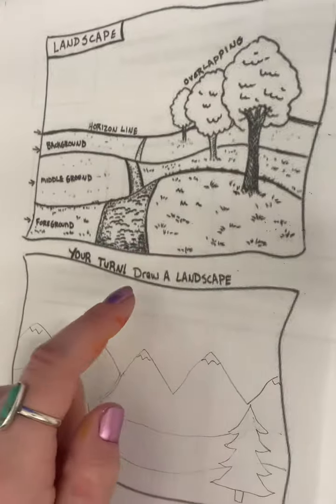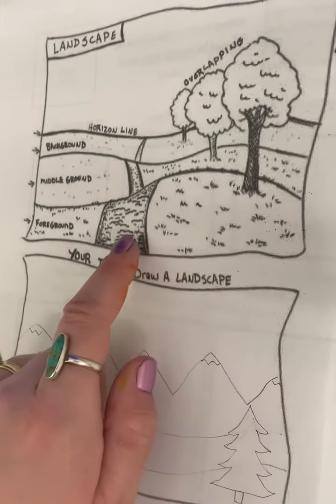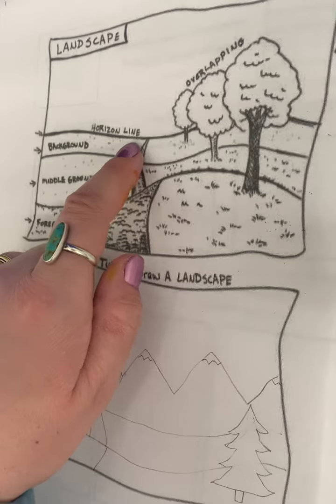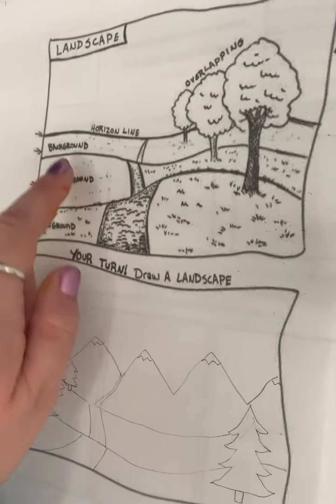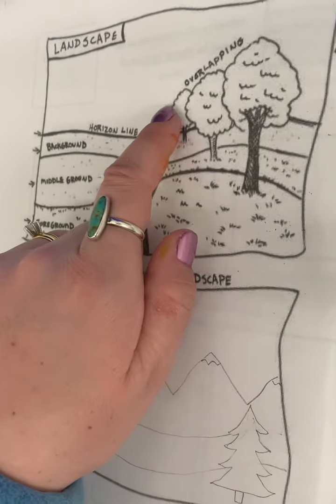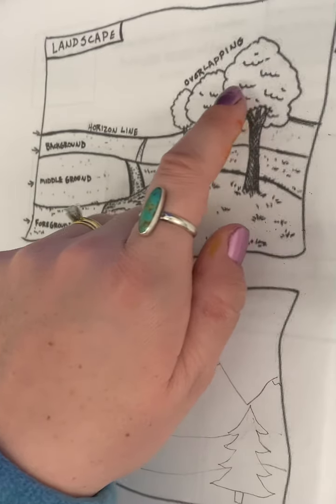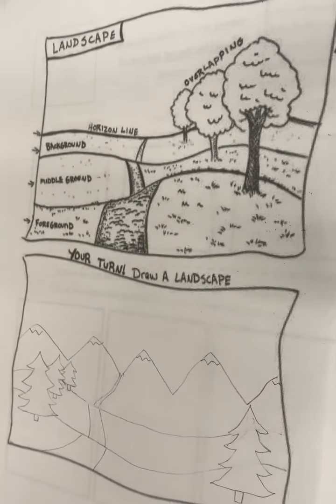If you notice, the trees and the path get smaller as they approach the background. The trees are also overlapping, which means one is in front of the other one.